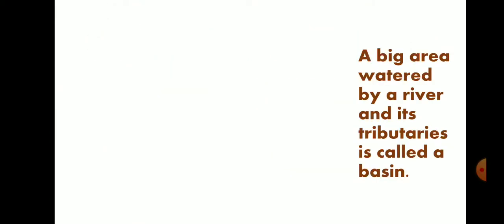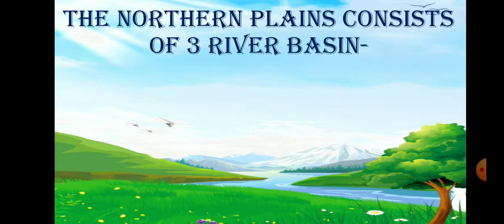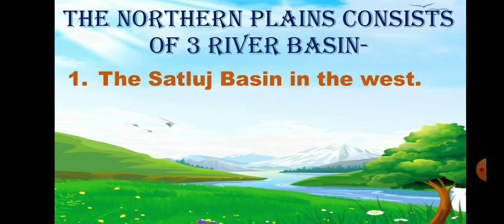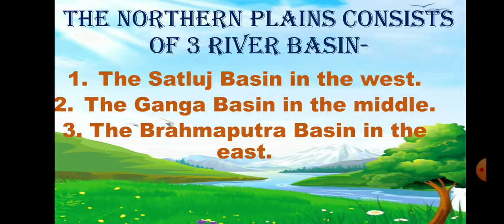Do you know what is a basin? A big area watered by a river and its tributaries — tributaries means a river that flows into a larger river — is called a basin. The Northern Plains consist of three river basins: the Satlaj basin in the west, the Ganga basin in the middle, and the Brahmaputra basin in the east.